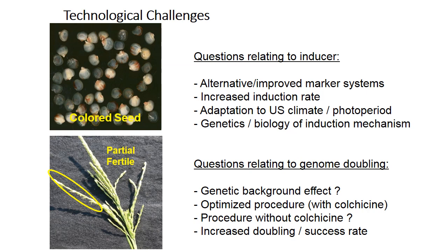Inducers are material helpful in natural induction of haploids. Challenges include alternative or improved marker systems, increased induction rate, adaptation to different climates or photoperiodism, and understanding the genetics and biology of the induction mechanism. Questions relating to genome doubling include: genetic background effect, optimized protocol, procedure without colchicine, and increased doubling success rate.